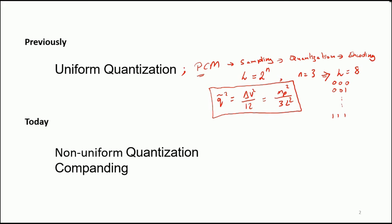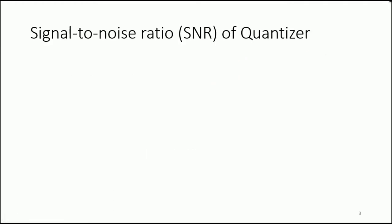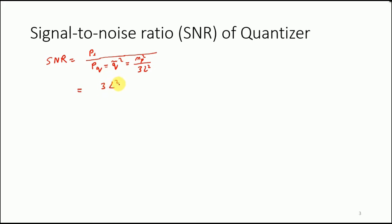In today's session we are going to talk about non-uniform quantization and specifically companding. Let us start with the metric signal-to-noise ratio, SNR of the quantizer. The SNR is simply the signal power divided by the noise power, and for us this is equivalent to 3L squared divided by mp squared times ps.